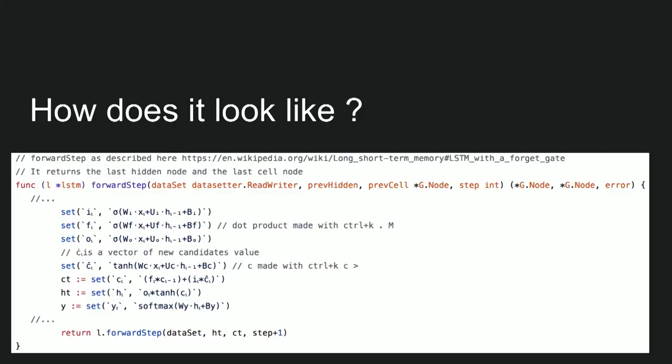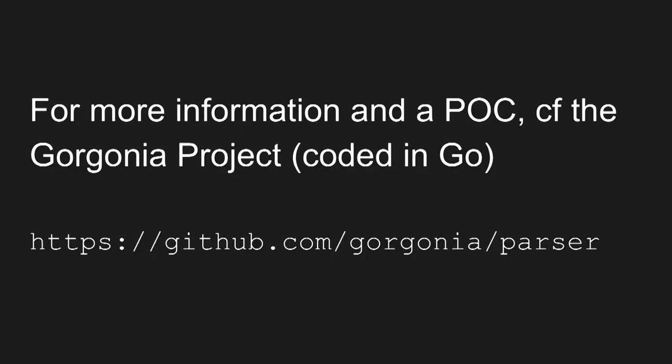How does it look? With the Gorgonia team, we've written such a parser. You can see it's in Go, because Go is great. We have the equations strictly written in Unicode, and the parser can understand those equations. For more information and a proof of concept, you can have a look at the Gorgonia project, which is coded in Go.